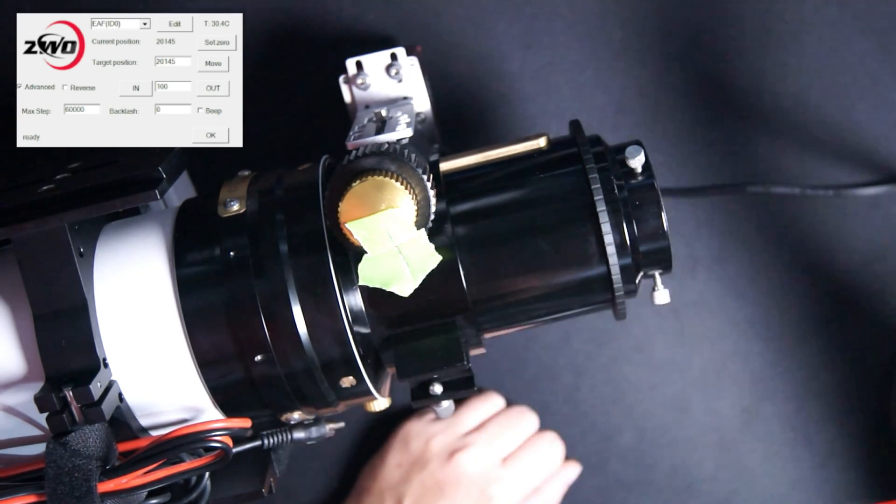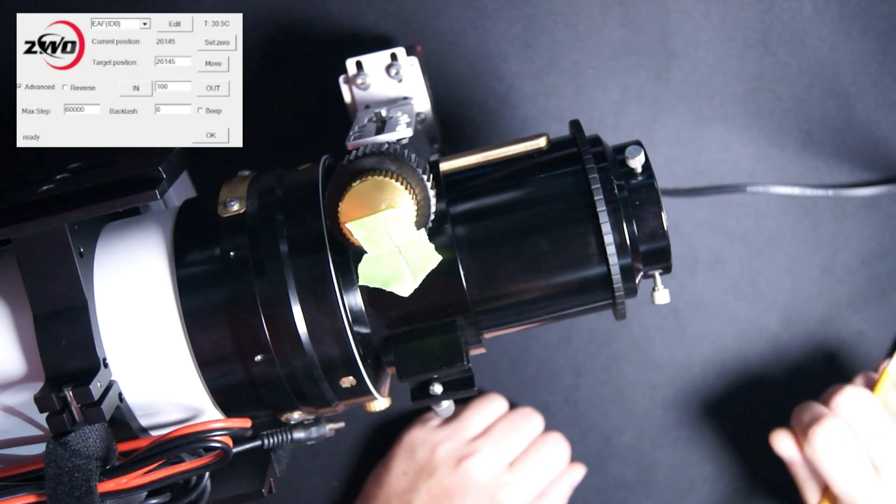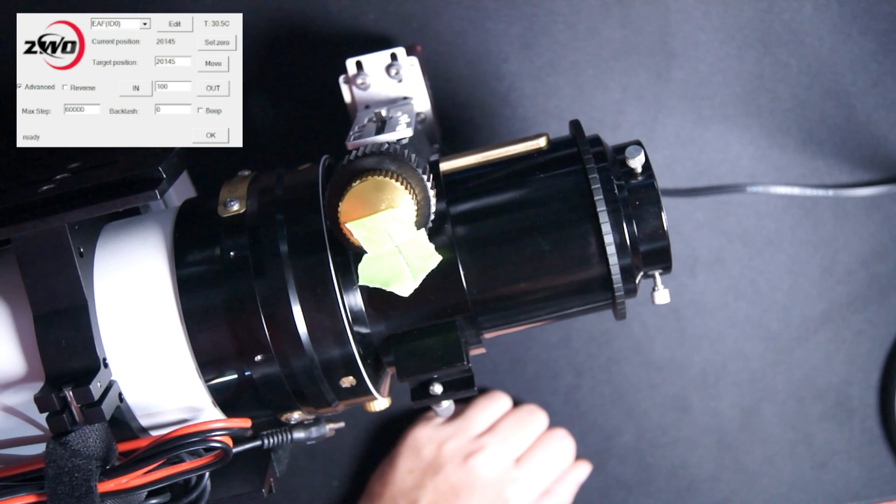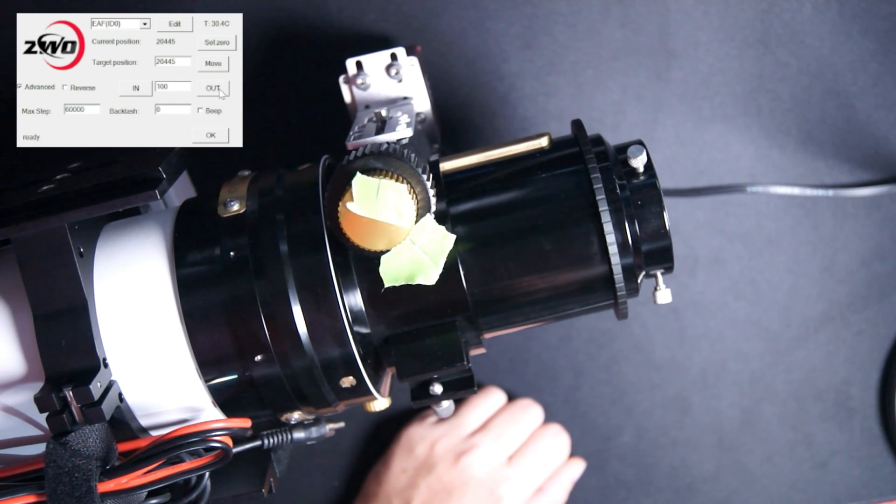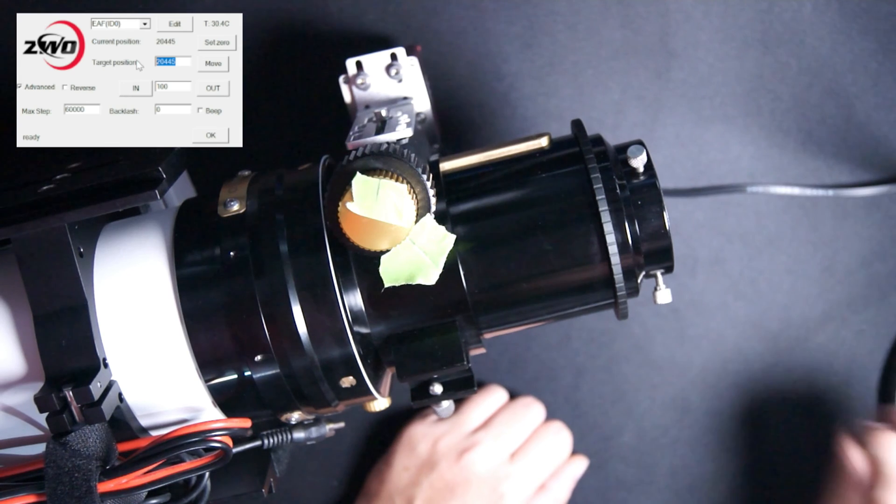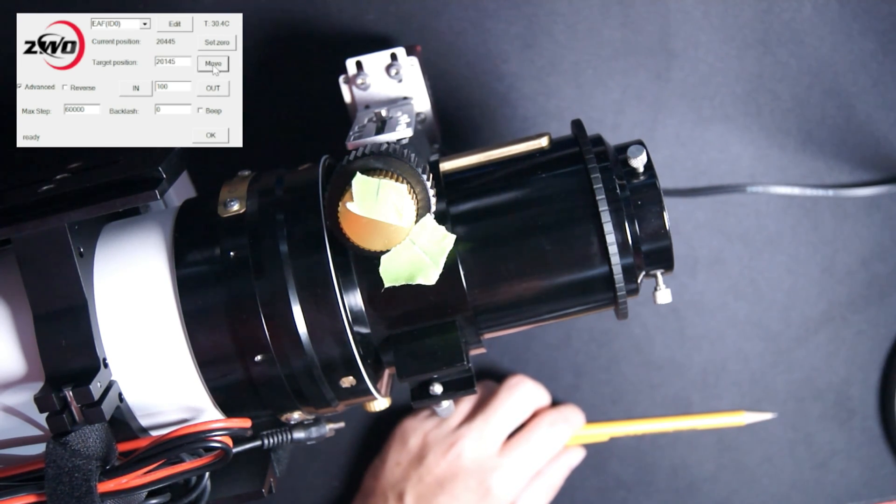We're going to take note of the current position, which is 20,145. We're going to write that down because that's where we're starting right now, and we want to be able to return to that position. We're going to move the focuser out about 300 steps in 100 step increments and see where we're at. So let's go ahead and move it out. Start off with 100 steps, two and three. And we're going to go back to our starting position and move back there.